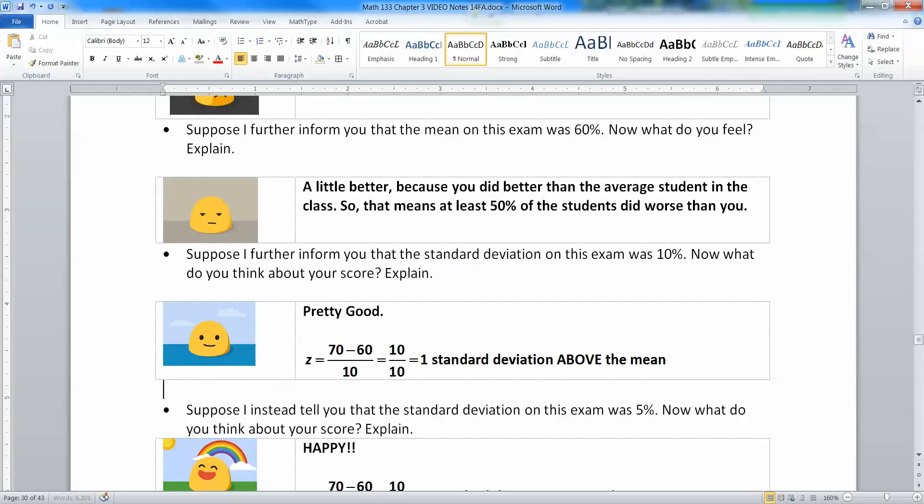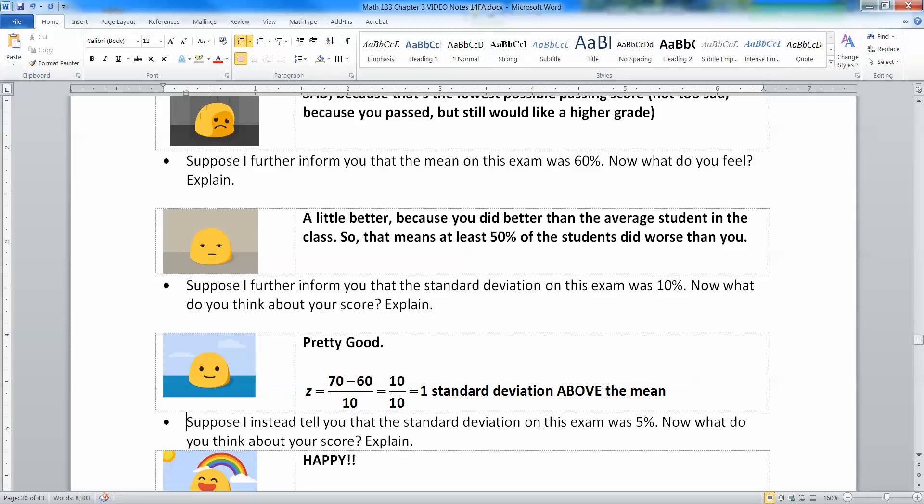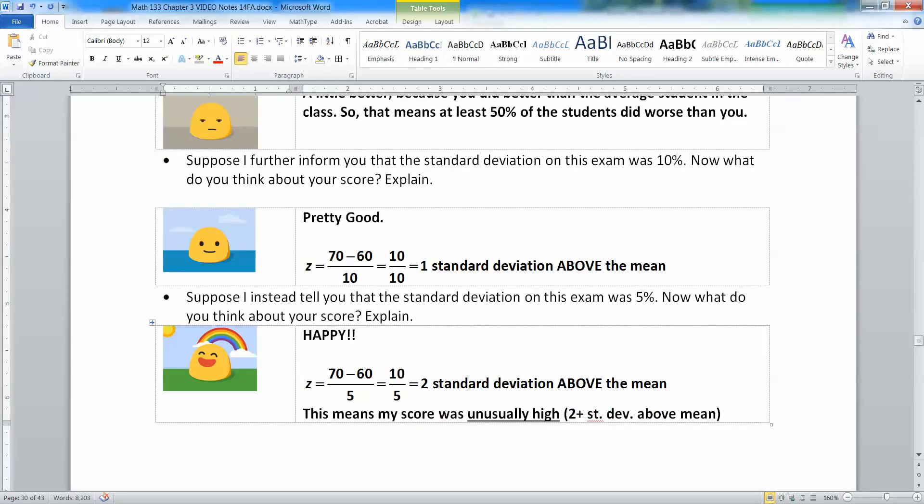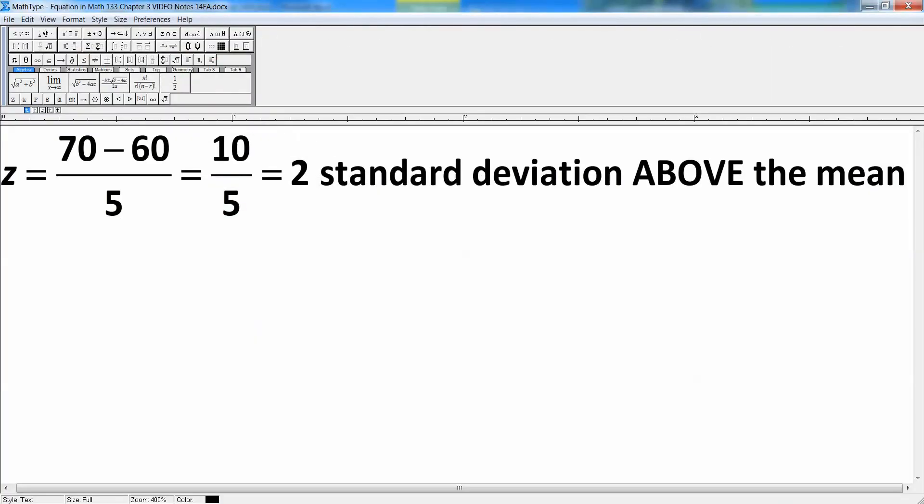But wait, what if I tell you instead that the standard deviation on the exam was 5%? I was wrong, it was 5%. And that would make you happy, really happy, because that means that you scored two standard deviations above the mean. That's really good. That's unusually high. Where do I get the 2? Well, it's because you scored a 70. The mean was 60. That means you scored 10 above the mean, but the standard deviation was worth 5. 10 divided by 5 means 2, so you were two standard deviations above the mean for your score.